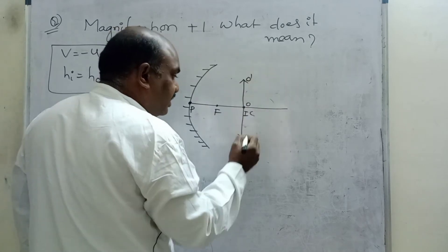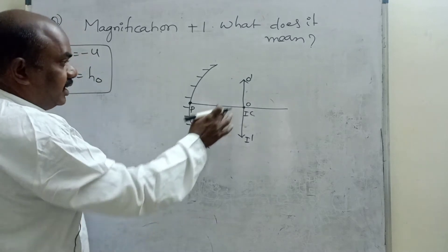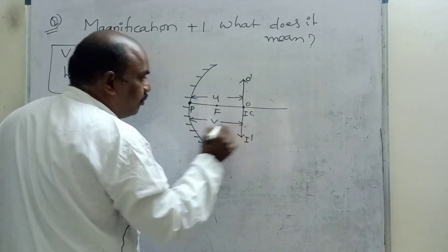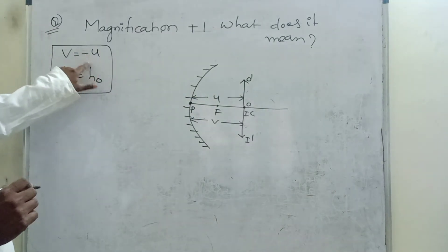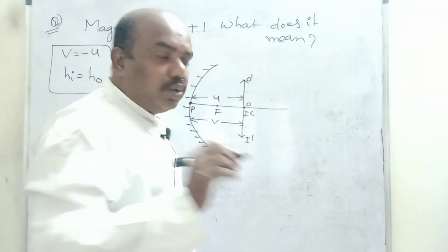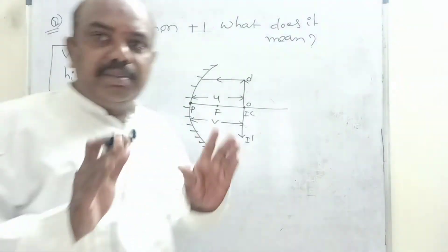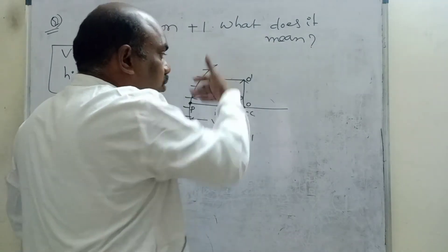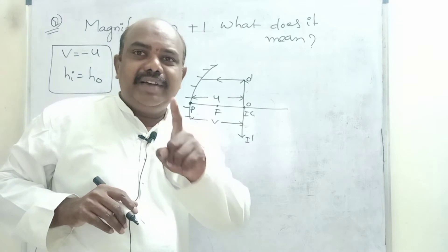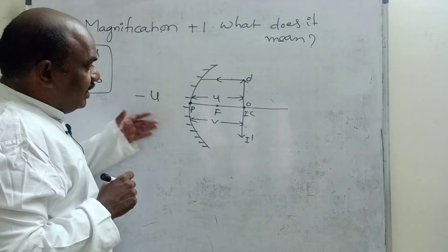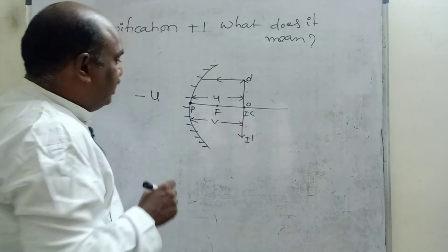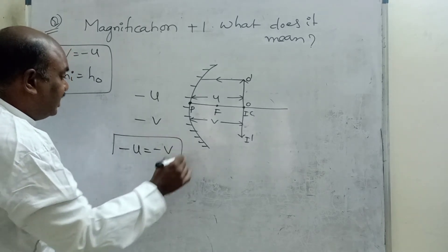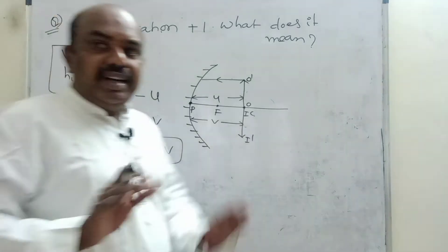This is object O, O dash; this is image I, I dash. All distances are measured from the pole. Pole to object — this distance is U. Pole to image — this distance is V. So U equals V here. But applying sign convention: the parallel incident ray comes from right to left, and measuring from pole to object is left to right — so object distance U is negative. Image distance V is also negative. So minus V equals minus U, but the condition requires V equals minus U — this condition is not satisfying.